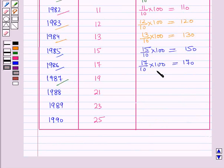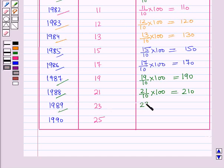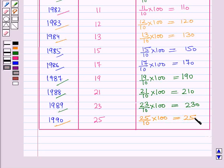For 1987, the index number is 19 over 10 into 100, which is equal to 190. For 1988, the index number is 21 over 10 into 100, which is equal to 210. For 1989, the index number is 23 over 10 into 100, which is equal to 230. For 1990, the index number is 25 over 10 into 100, which is equal to 250.